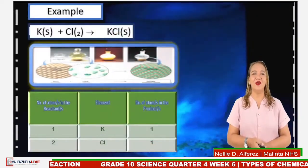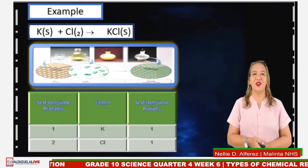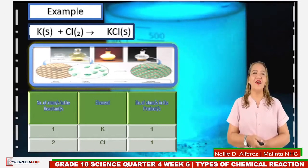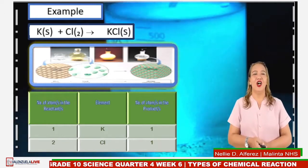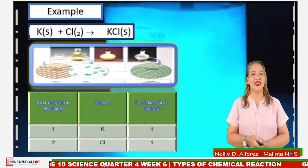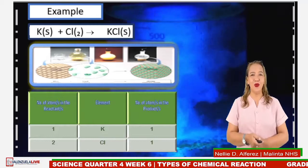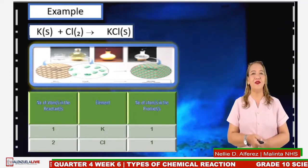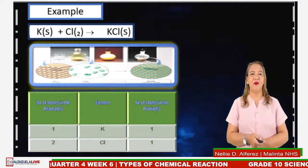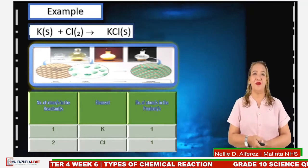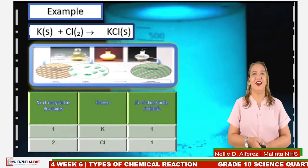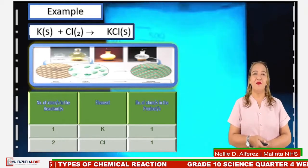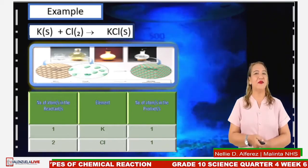For example, when potassium reacts with chlorine, they yield or produce potassium chloride. Notice that the equation is not balanced. So, to apply what you have learned in the previous lesson, we have to add coefficients to make the equation balanced. To see if the chemical reaction is balanced, here is the inventory of atoms in each element.